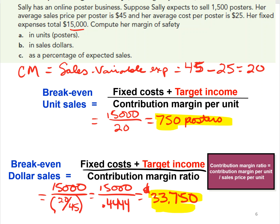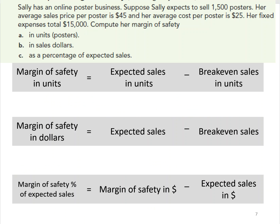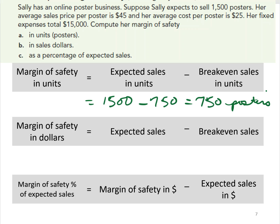Now we can calculate the margin of safety in units. Expected sales are 1,500 posters and break-even units are 750, so the margin of safety is 750 posters. That's a pretty significant cushion — she can fail to sell 750 of her expected 1,500 and still break even.